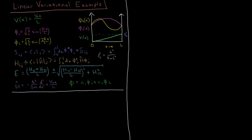For our Hamiltonian matrix, we're going to have four elements, all being the integral from 0 to L with respect to x of phi star i times the Hamiltonian acting on phi j. Our Hamiltonian is the kinetic energy operator — minus h-bar squared over 2m times the second derivative with respect to x, since the function is one-dimensional in x — plus our potential energy V0 x over L. We need to find these three unique Hamiltonian matrix elements.